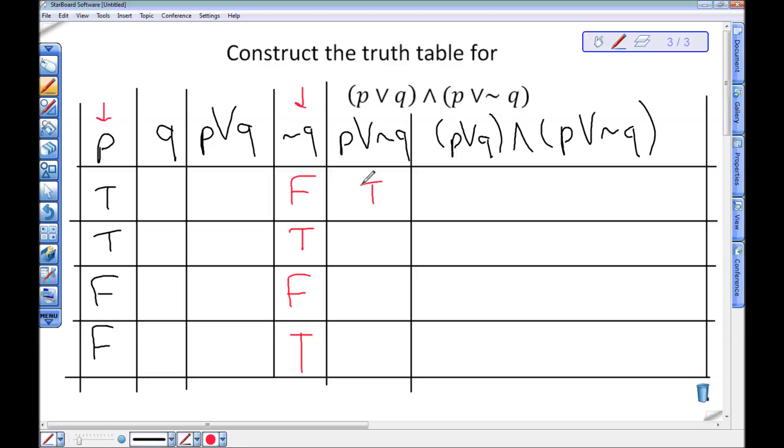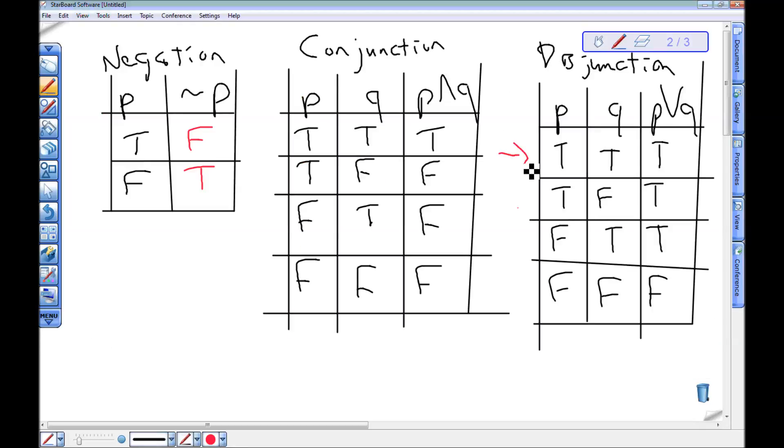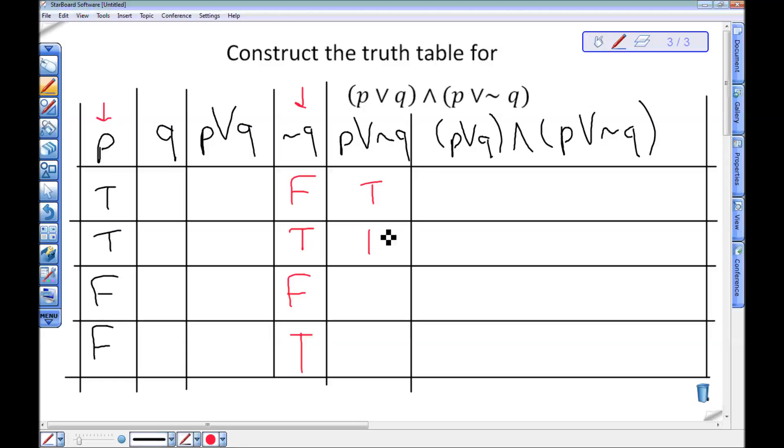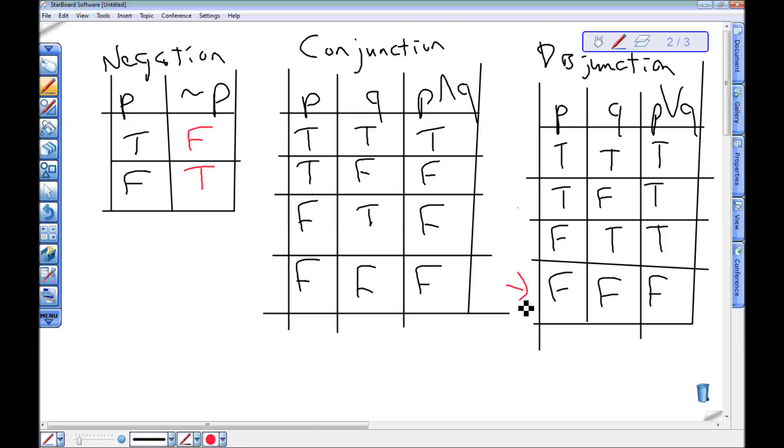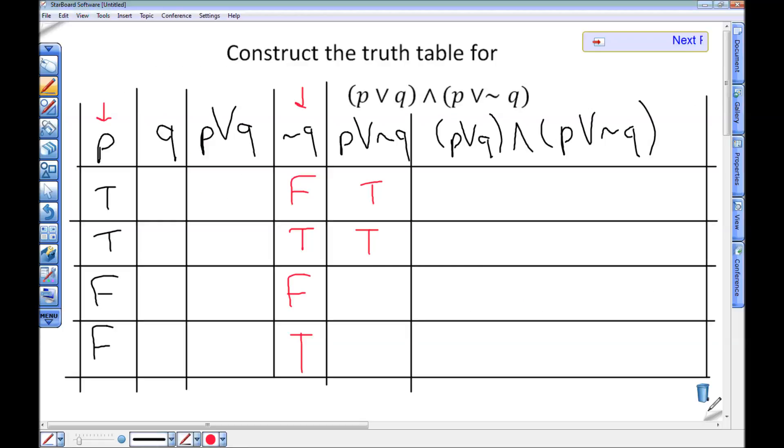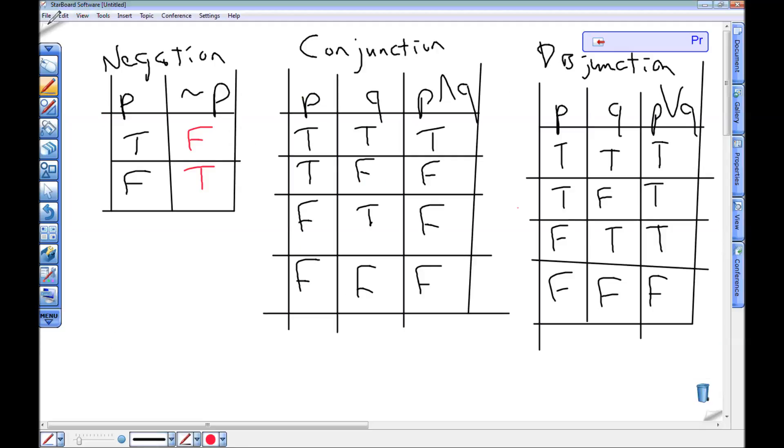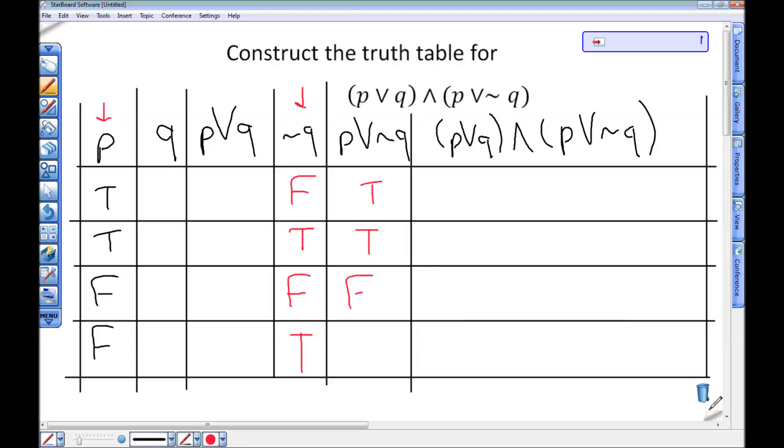True or true is true. So I'm going to put a T right here. False or false is false. So I'm going to put an F right here. And then finally false or true. False or true is true. So I'm going to put a T right here. And then I can uncover my other two columns.